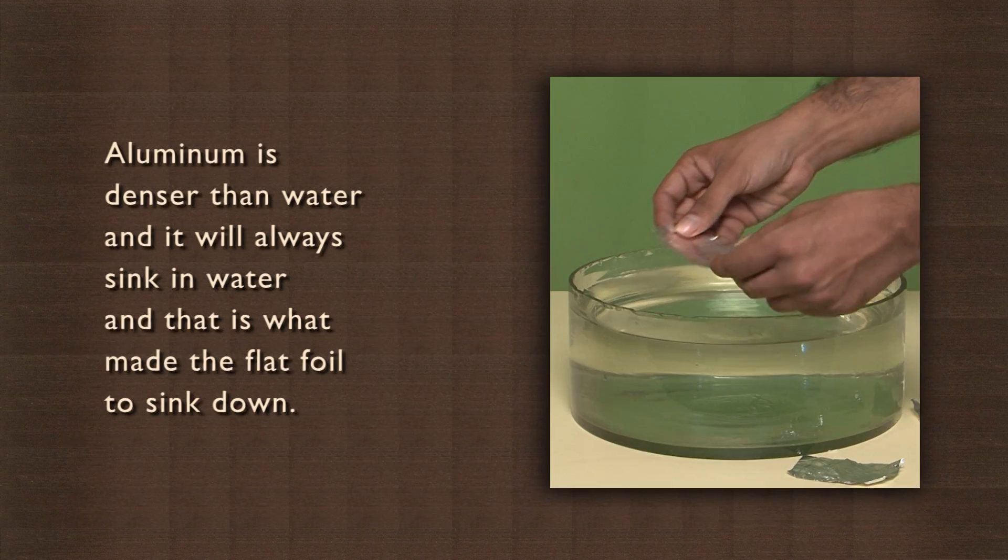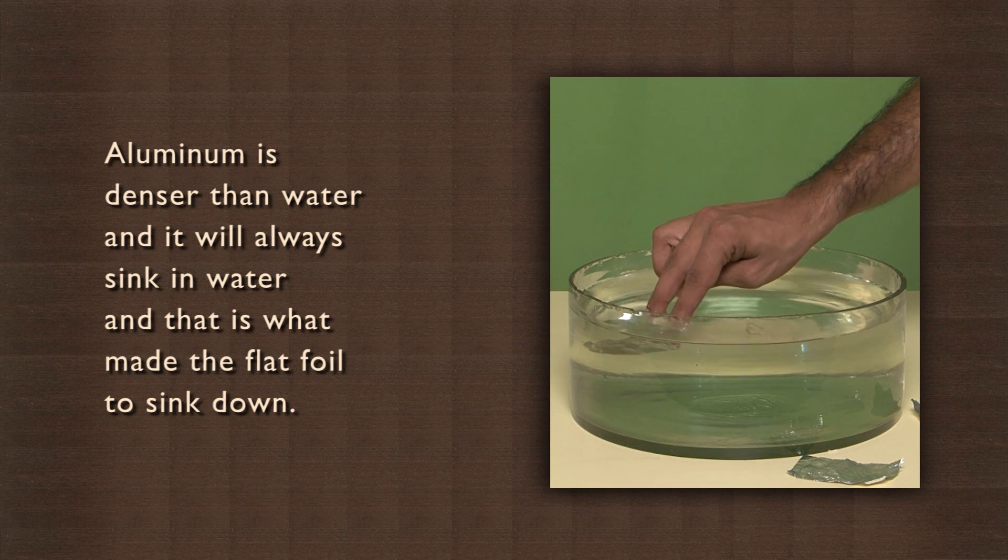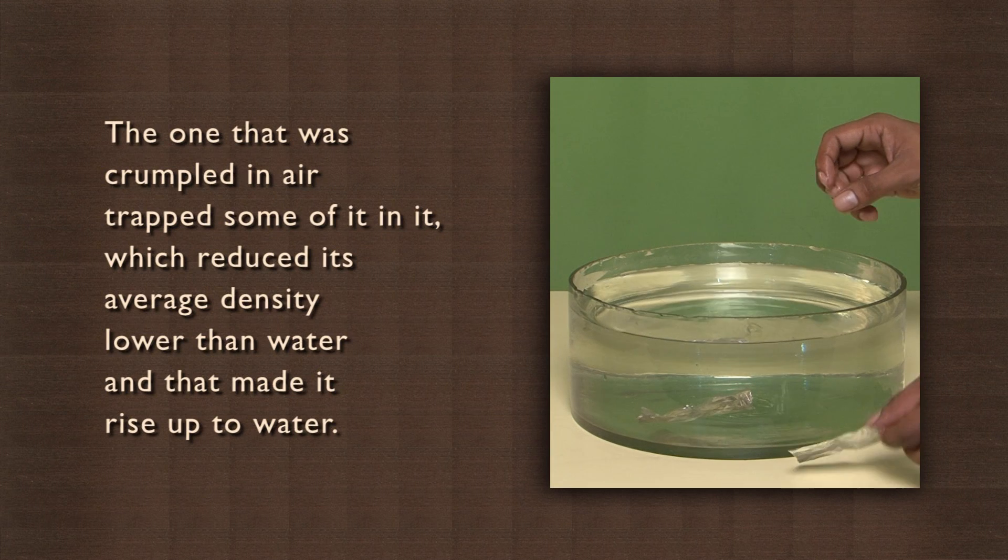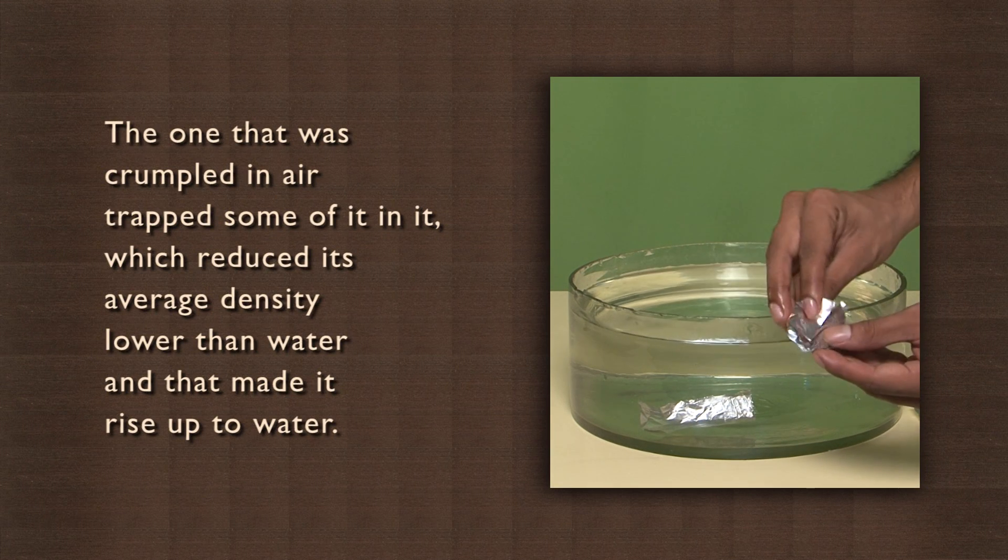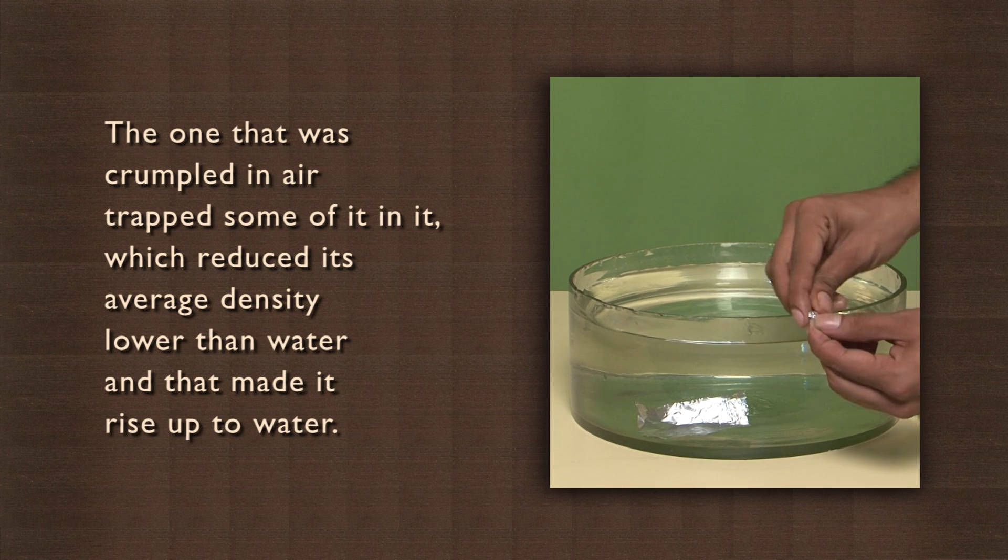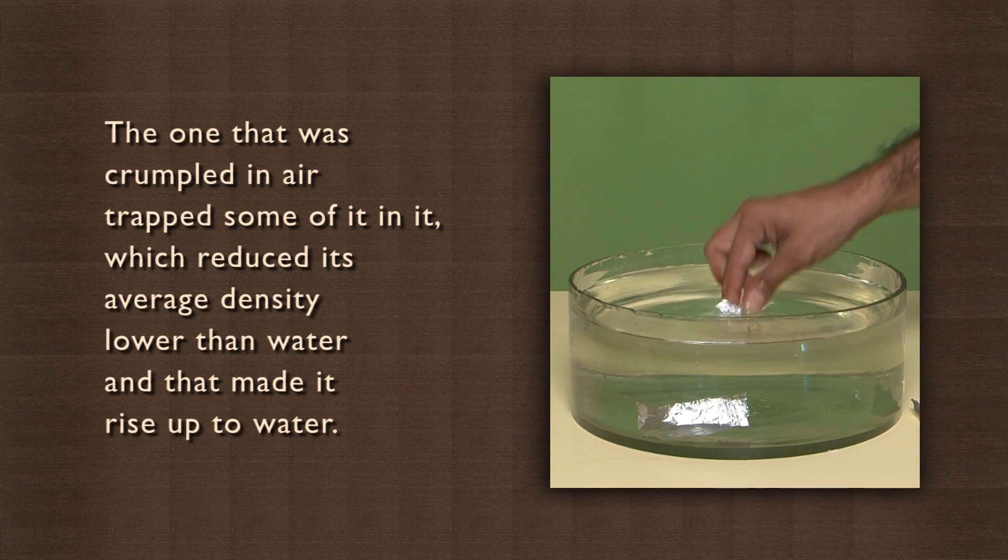Why did that happen? Aluminum is denser than water and it will always sink in water, and that is what made the flat foil sink down. The one that was crumpled in air trapped air in it, which reduced its average density lower than water, and that made it rise up to the surface.